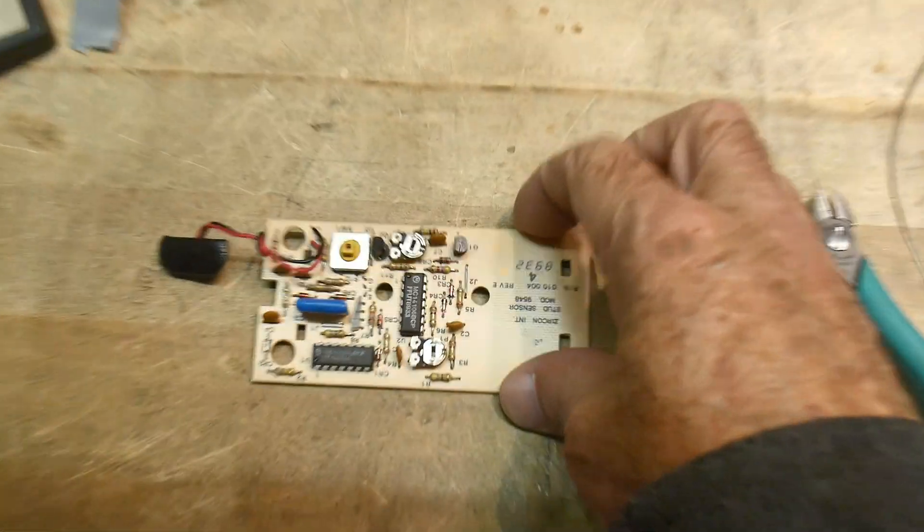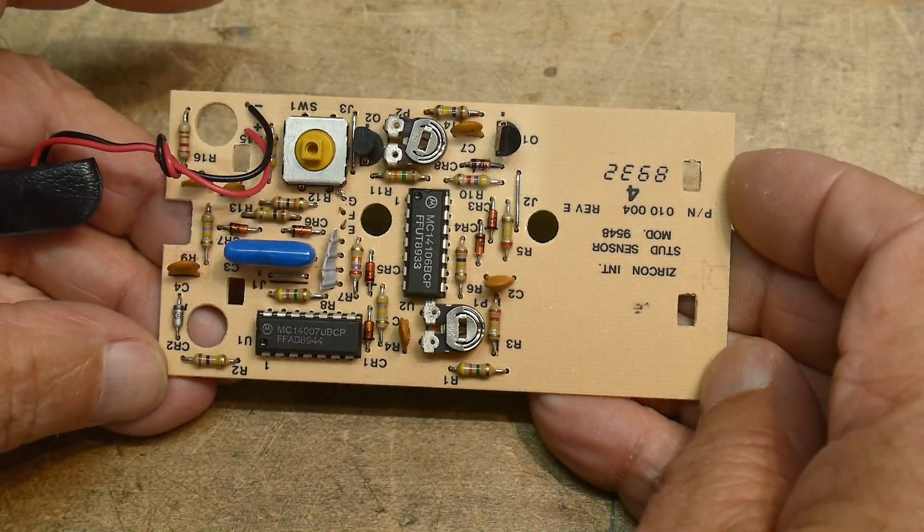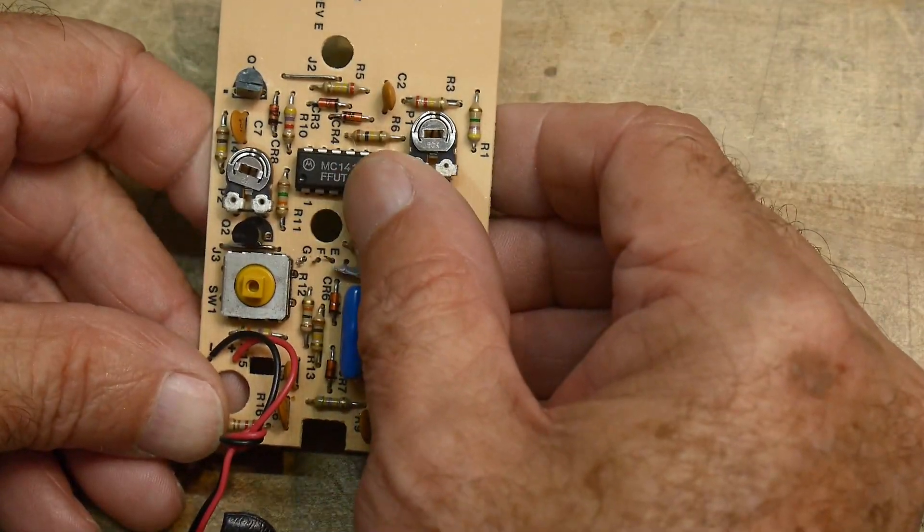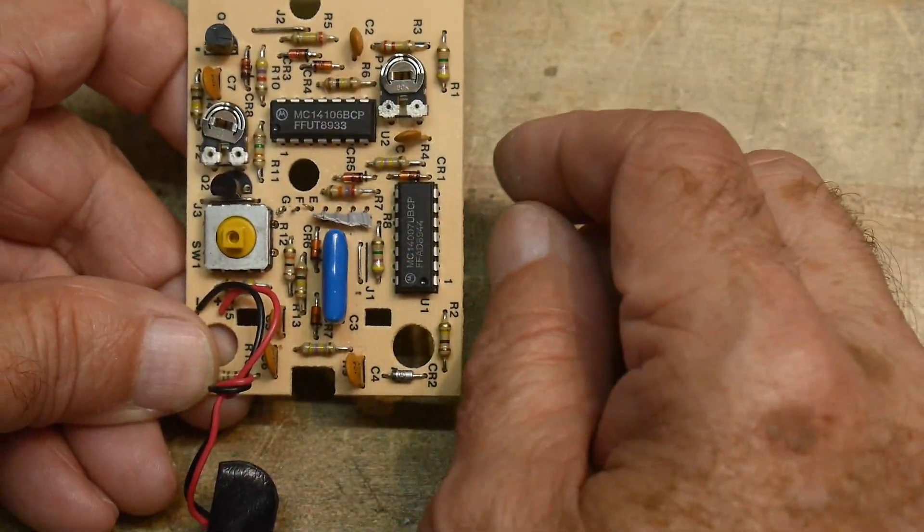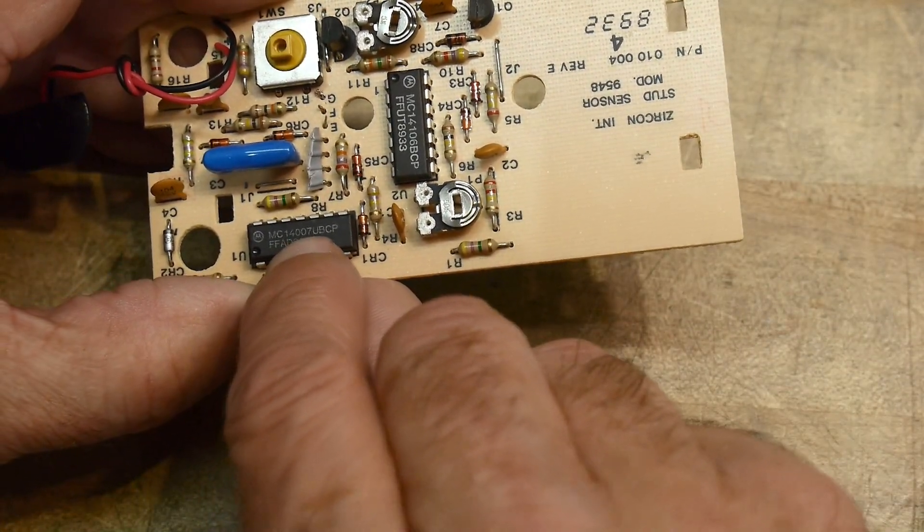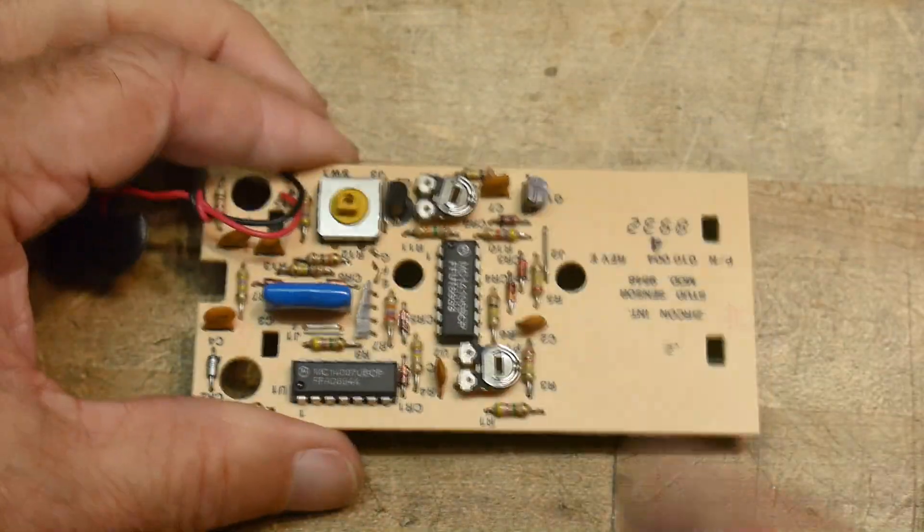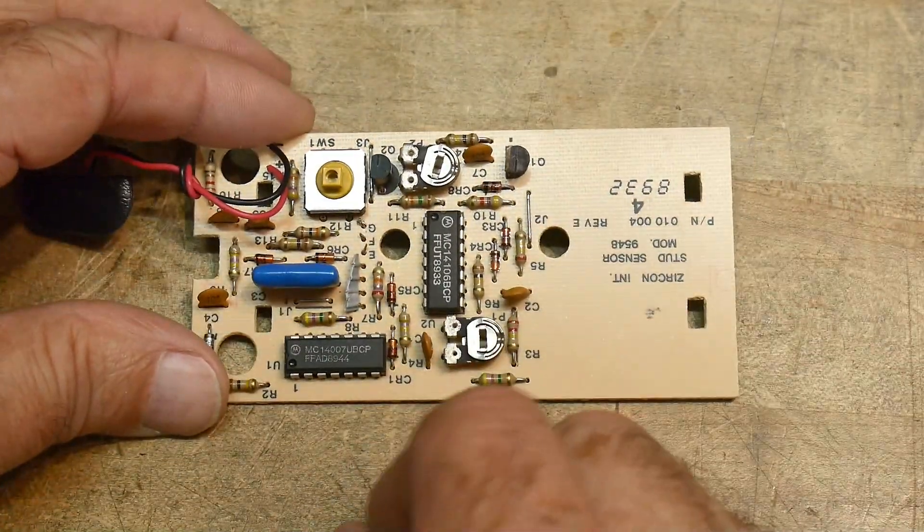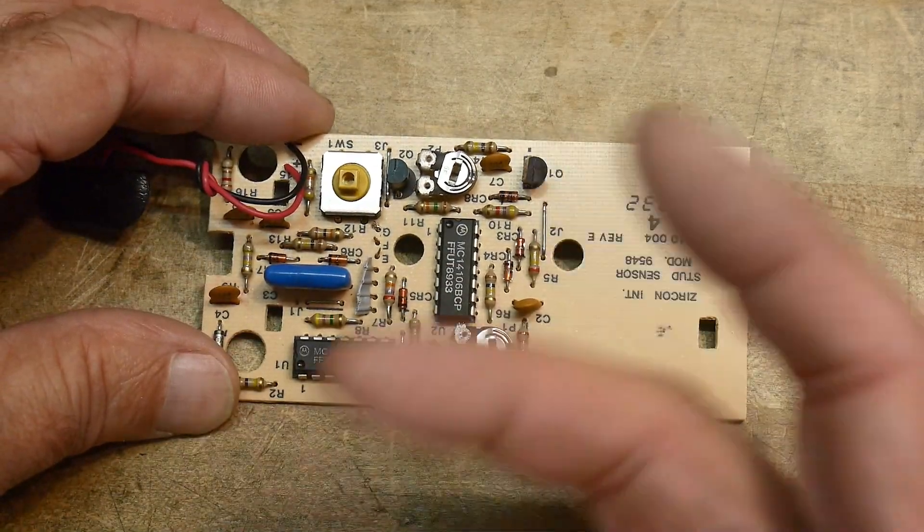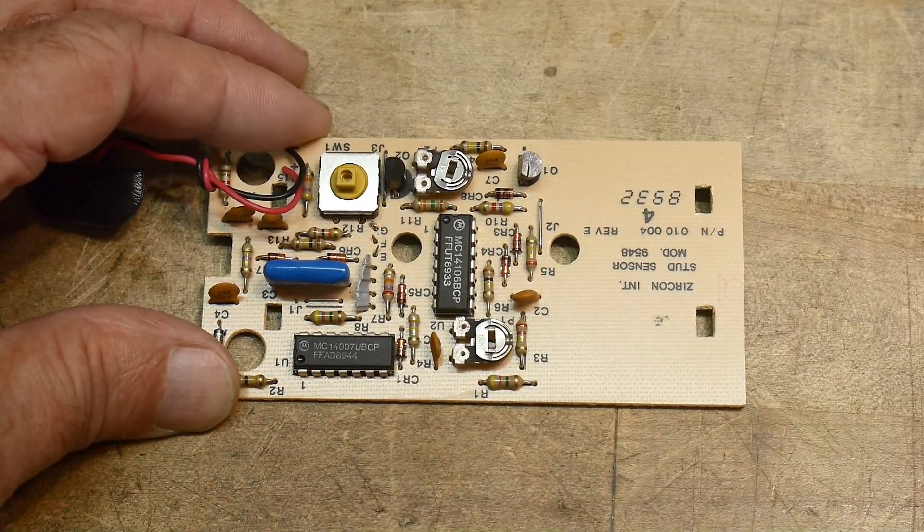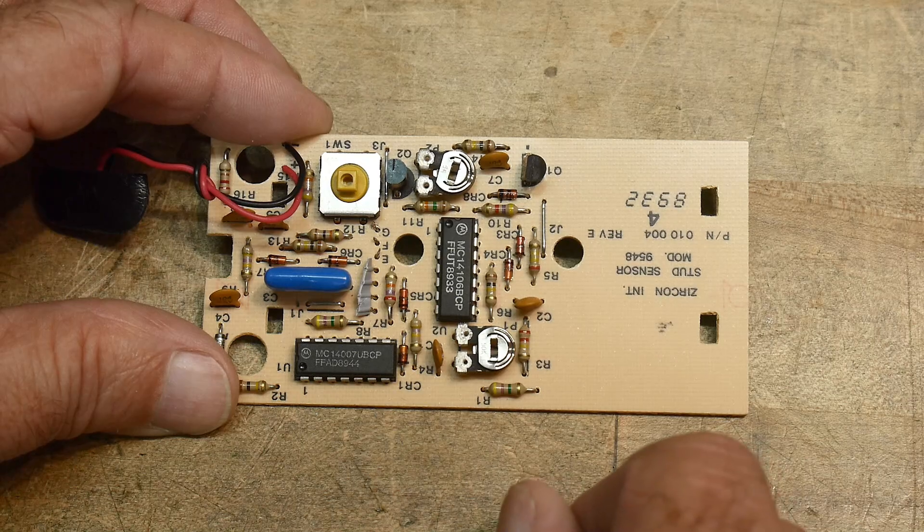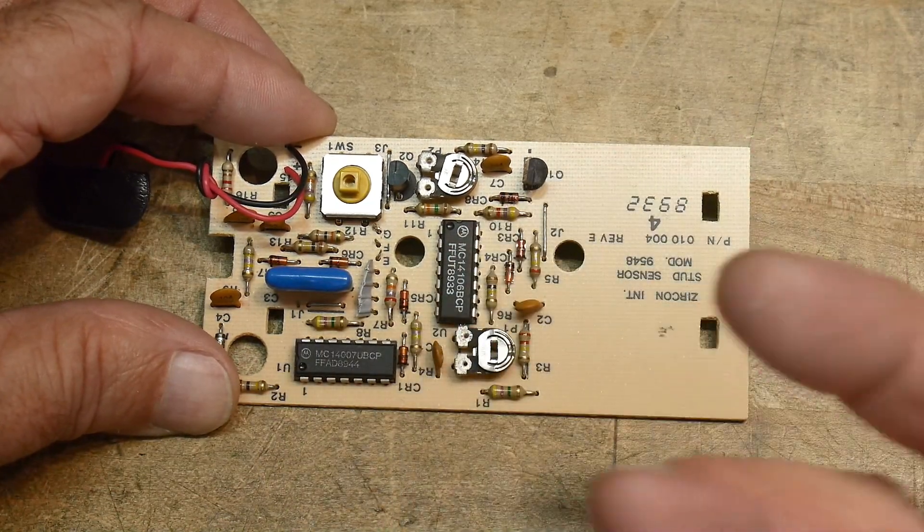So here's the rest of the board. It has two ICs. It has a MC14106. I've done a chip of the day on that one. And it has a MC4007. And I did a chip of the day on that one. So go back and watch those videos. This one is the Schmidt trigger. And this one is a bunch of MOSFETs. P channel and N channel. A little bit of both. So it's kind of like here's a bunch of transistors and here's some comparators. I mean, they're going to be using these Schmidt triggers as comparators.